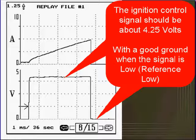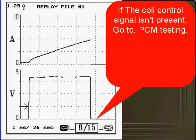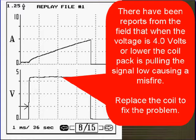There have been reports from the field that when the voltage is 4 volts or lower, the coil pack is pulling the signal low, causing a misfire. Replace the coil to fix the problem.